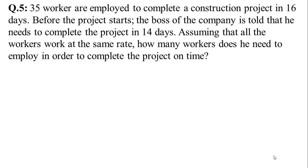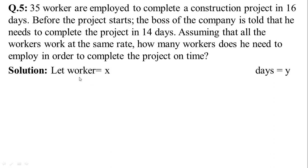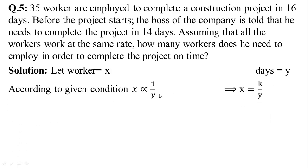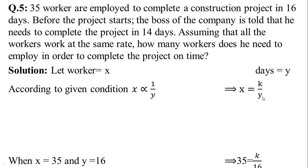First of all, according to the given condition, let worker equal x and day equal y. Since x is inversely proportional to y, x is proportional to 1 upon y. Removing the proportionality sign, this implies that x is equal to k upon y.